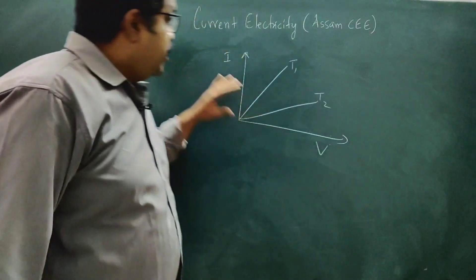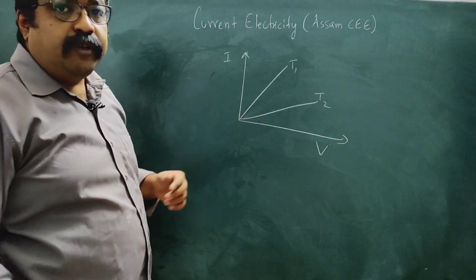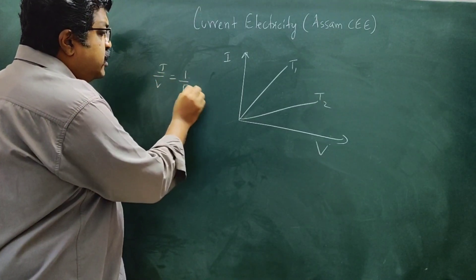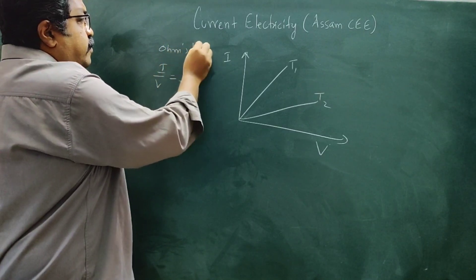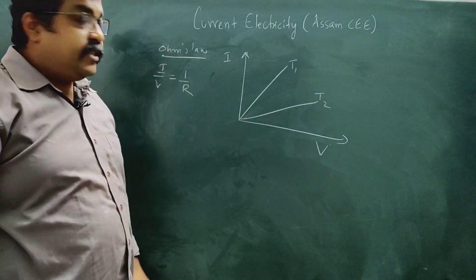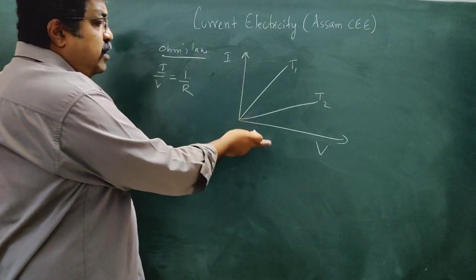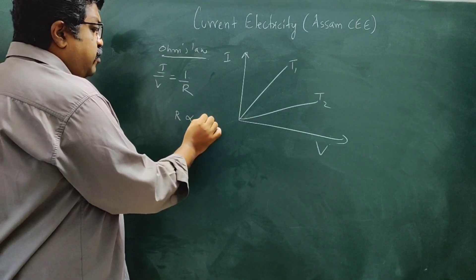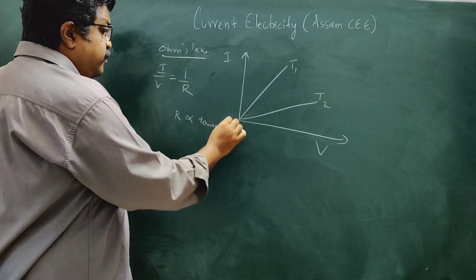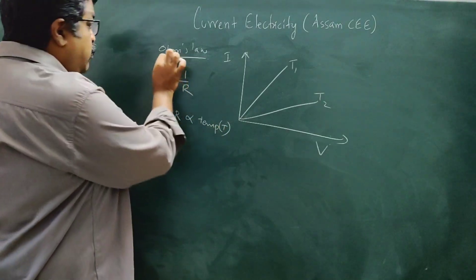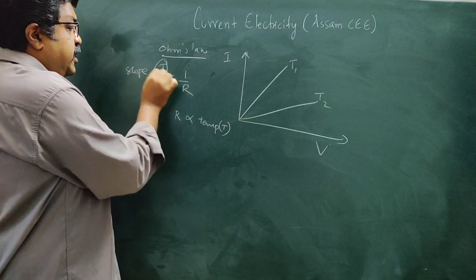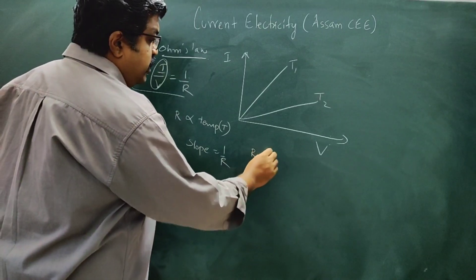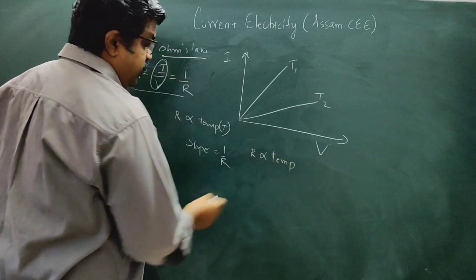Let's talk about the current-voltage graph. The slope of the graph represents I by V, which is 1 divided by resistance. The slope is inversely proportional to resistance. The resistance of a conductor is directly proportional to temperature. Since slope = 1/R, slope is inversely proportional to temperature.